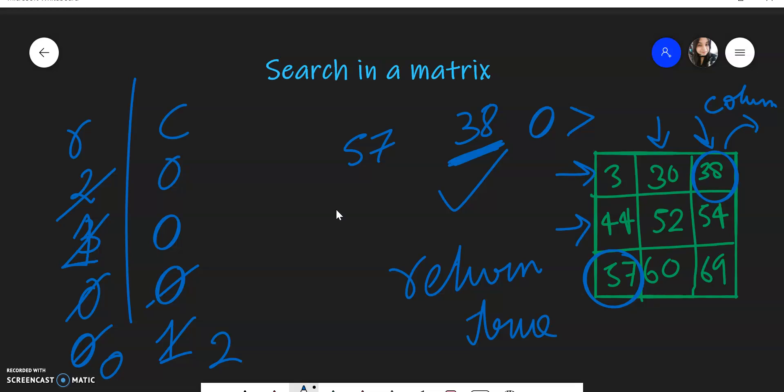Now suppose in case this element was not present, it was something else like 39. So in this case, what will happen? Because this number is greater, we will try to decrement the row. But when the row becomes minus one, it will not satisfy the base condition and come out and return false because we have checked all the possibilities and the number is not present. So this is the algorithm.